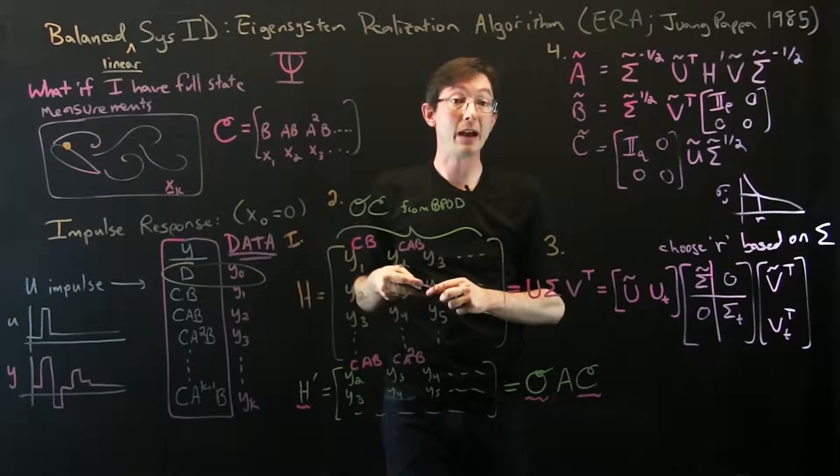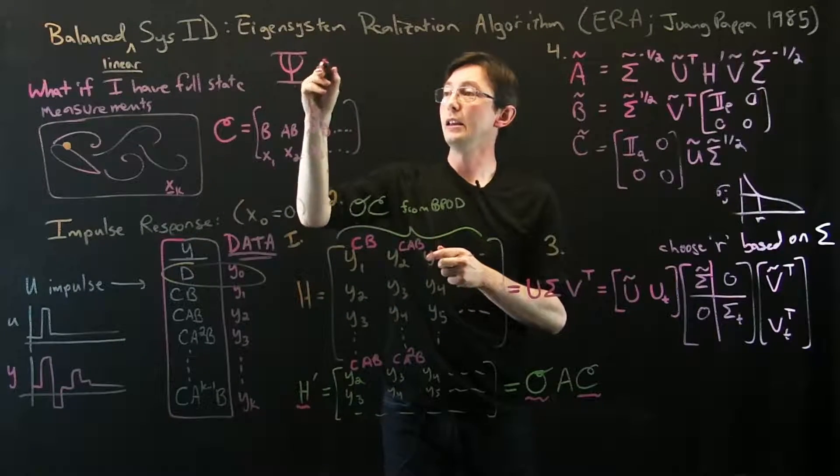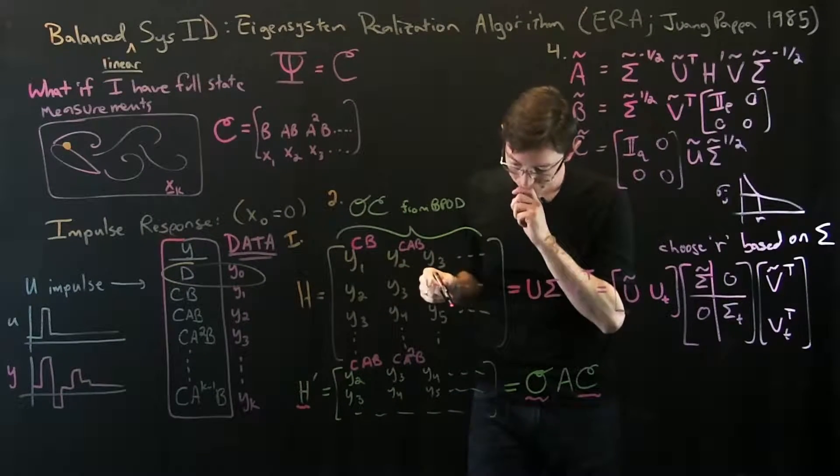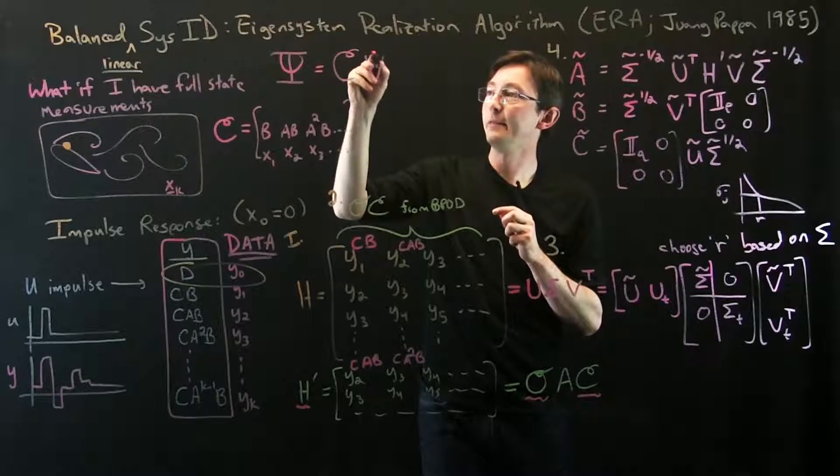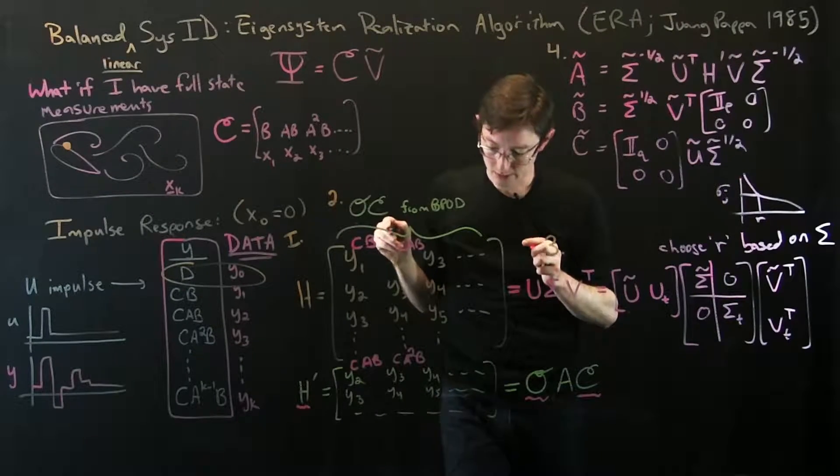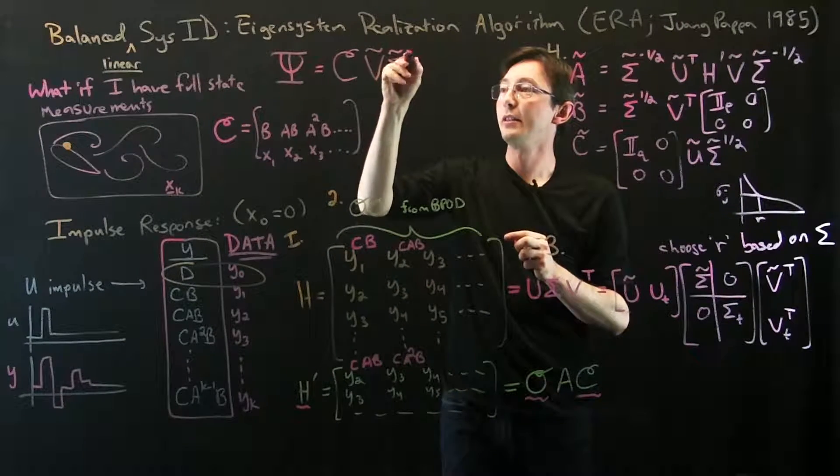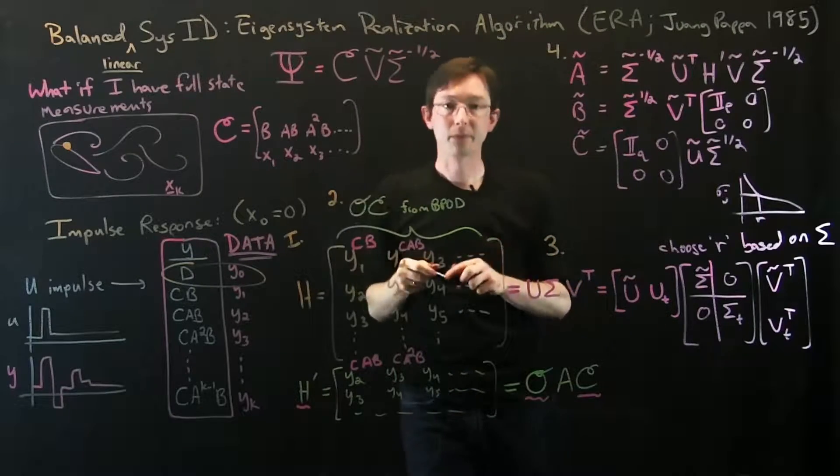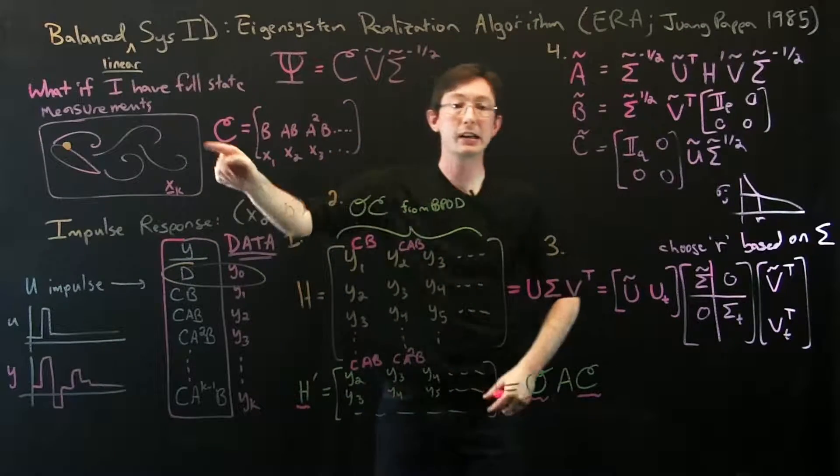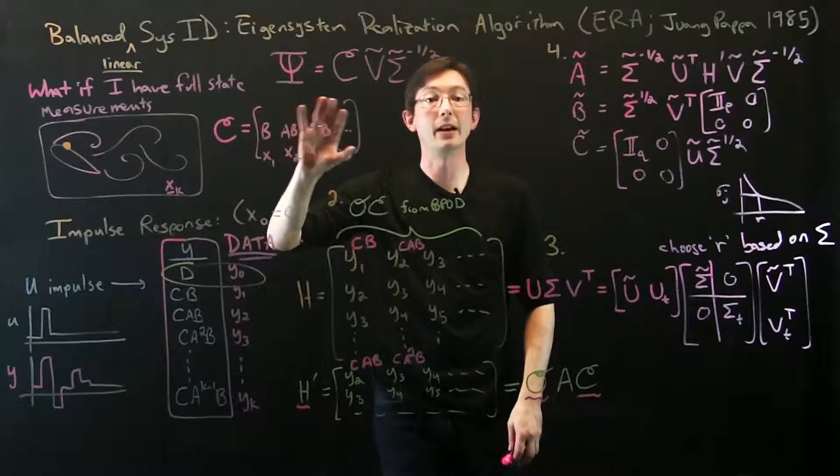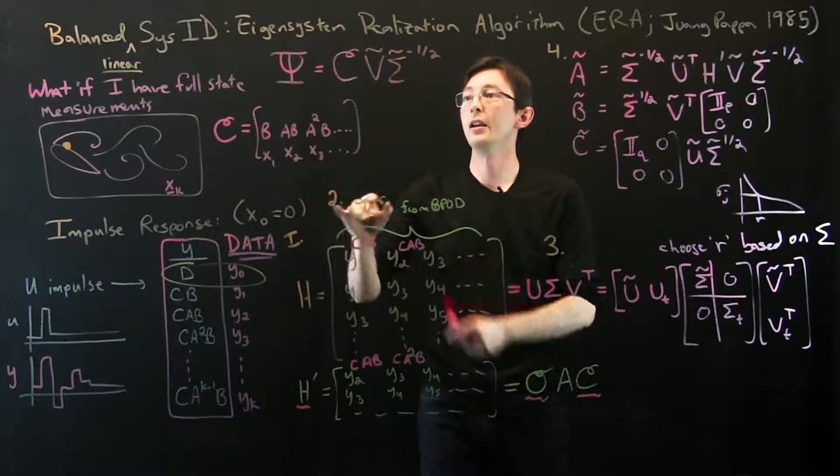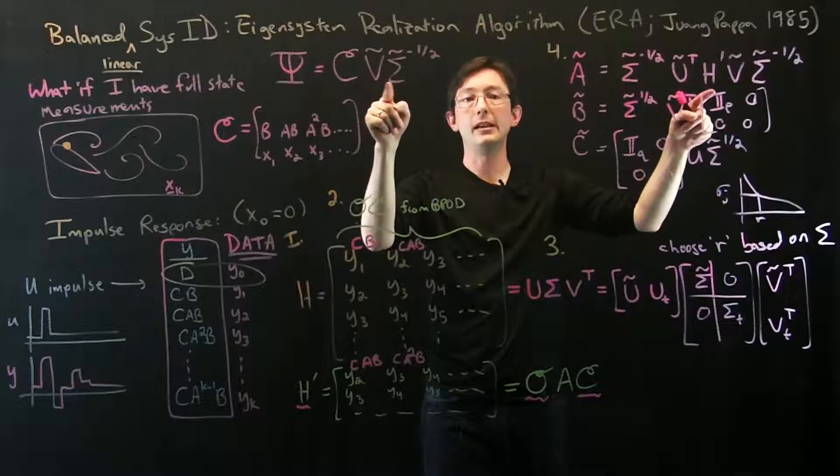What I can do is I can essentially say those psi modes—these are my modes from balanced truncation—are going to equal curly C times V tilde times sigma tilde minus one half. So if I had access to this data, this is very expensive data to get sometimes, but maybe I can do this one time in the laboratory.